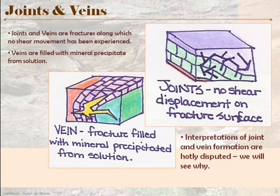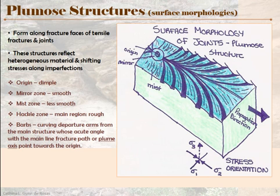Even though we can talk about a lot of details, there are no absolute answers yet. A helpful way to start this conversation is to talk about plumose structures. This is a structure you often see in association with jointing — it occurs on the fracture planes or fracture faces of joints, and it represents the propagation of stress along the joint as it forms.